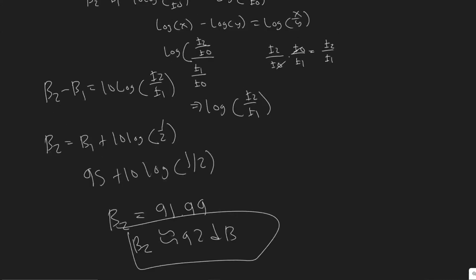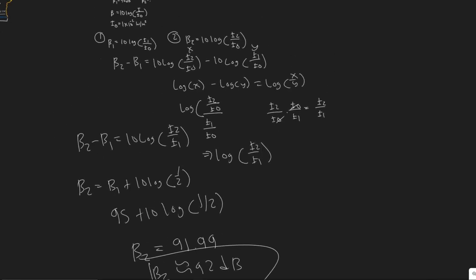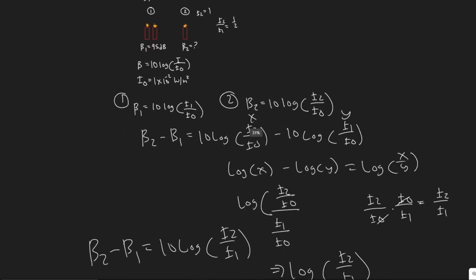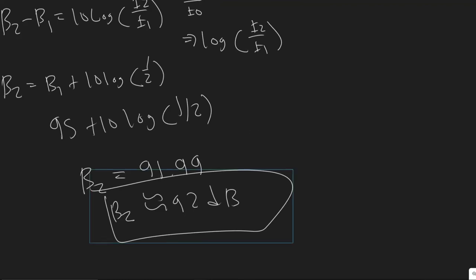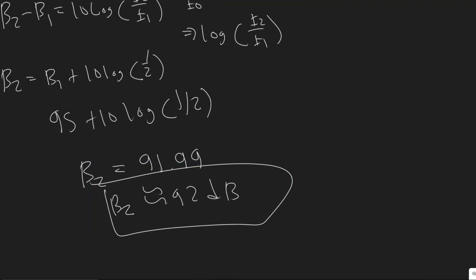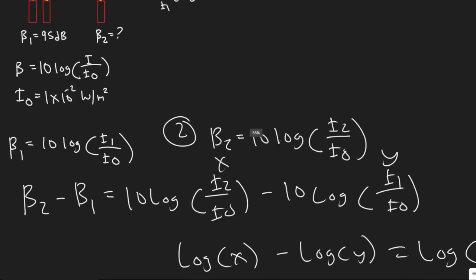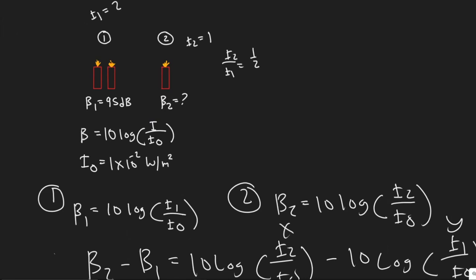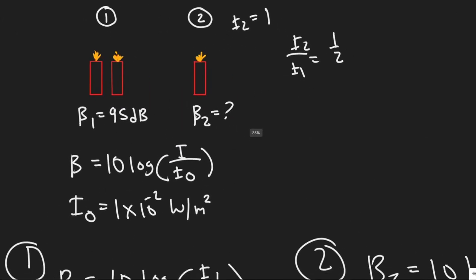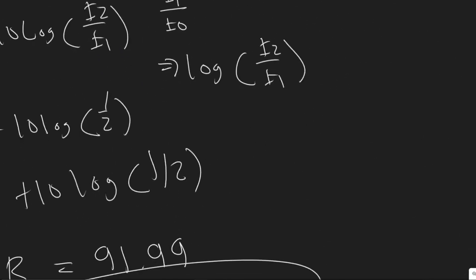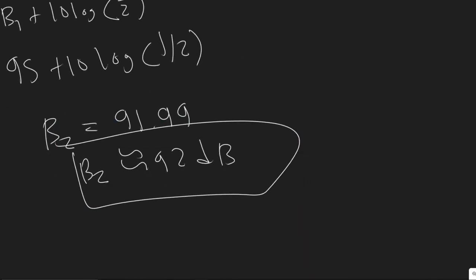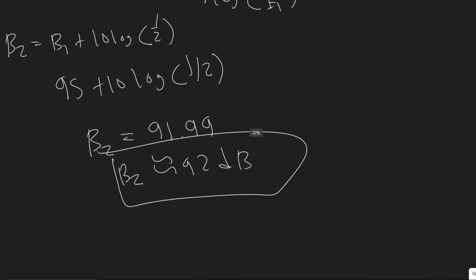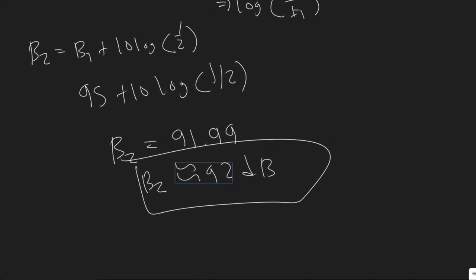One correction from earlier in the video: I said that the three-decibel difference was a big jump in terms of what you'd hear. That's actually incorrect. The human ear can only detect about a one to two decibel change, so honestly you wouldn't really perceive much loudness difference from adding a second firecracker — it's only three decibels. Your answer is still 92 decibels; I just wanted to fix that.